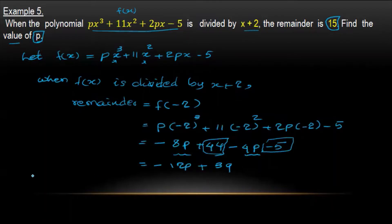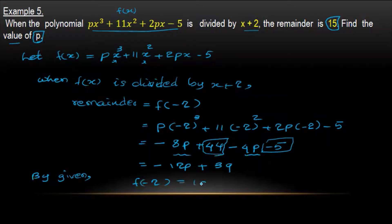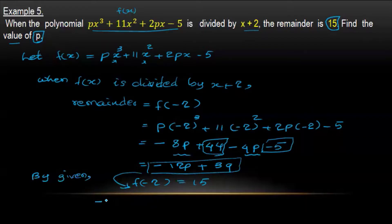Simplifying further: minus 8b minus 4b is minus 12b. And the constant terms give us plus 39. So the equation becomes: minus 12b plus 39 equals 15.